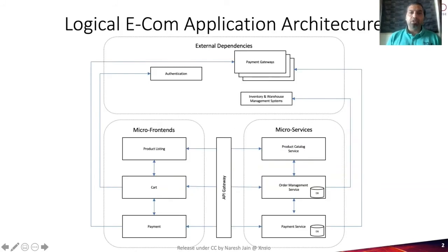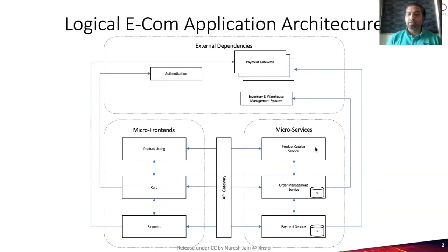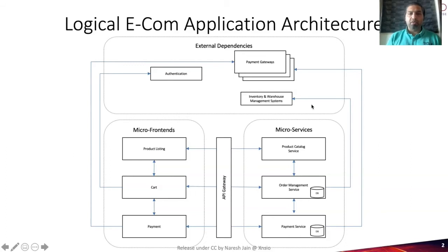Let me start with a simple logical application architecture of an e-commerce app. You have a set of micro frontends — a product listing frontend, a cart frontend, a payments frontend. They talk to a set of microservices: product catalog services, order management services, payment services, and so forth. They also have external dependencies: authentication, payment gateways — in fact, multiple payment gateways — plus inventory management system and a whole ton of other dependencies.